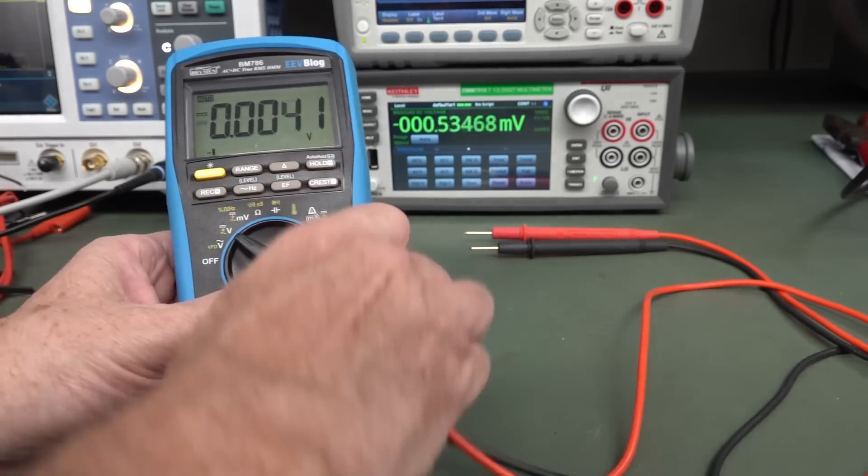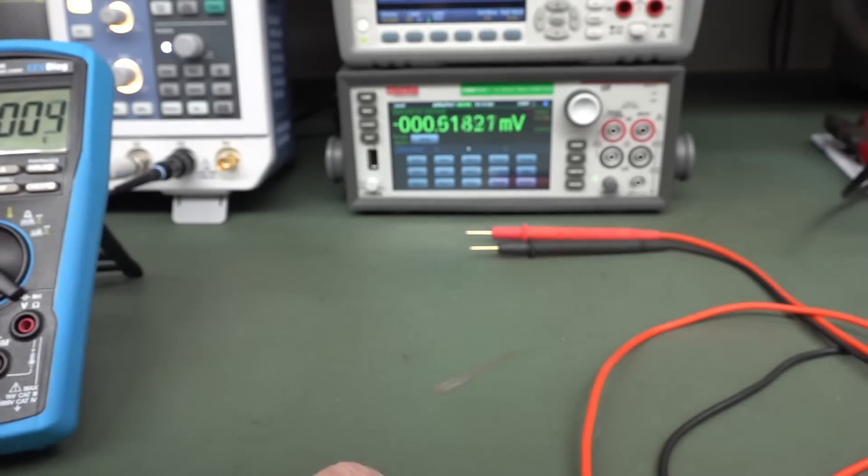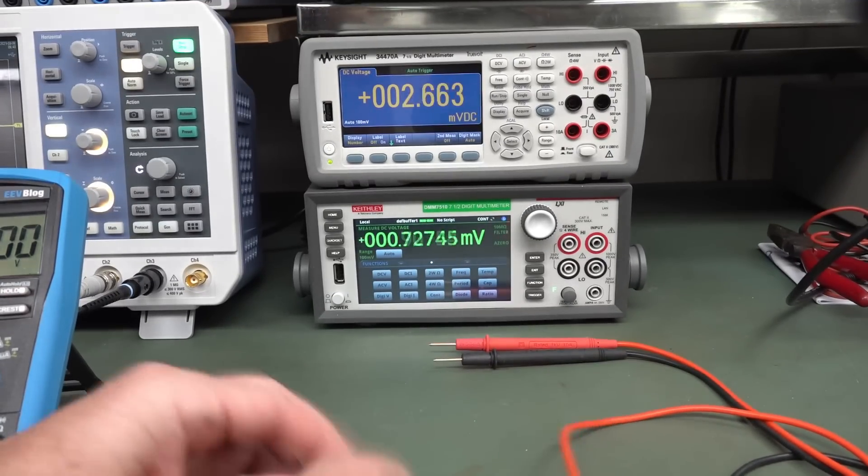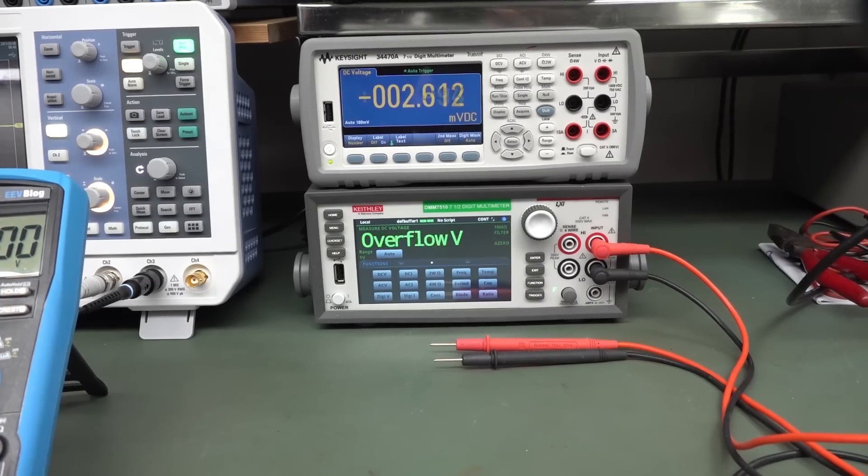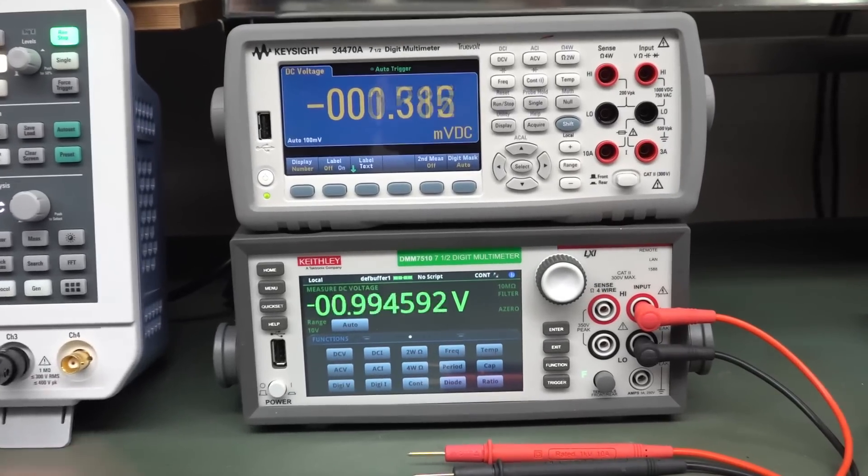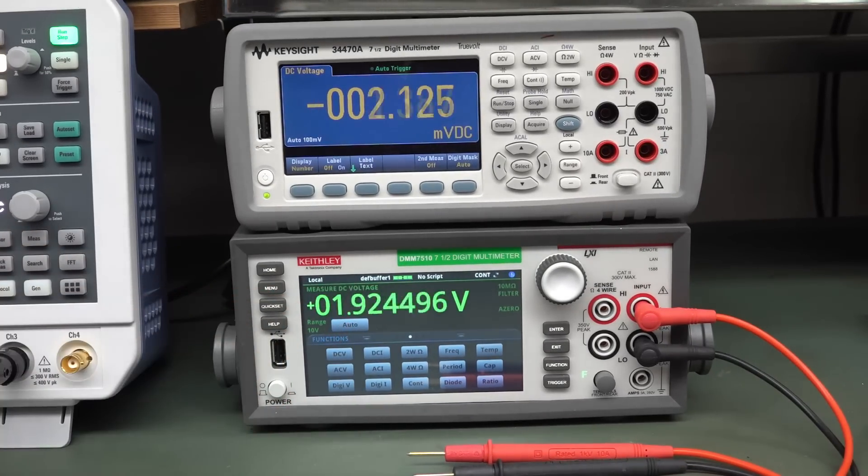What happens if you take the same leads and you plug them into a high-end six and a half digit or seven and a half digit multimeter like this? Well, that's one and a half volts. What's going on there? Something's a bit weird. Why are we getting like a volt and a half?